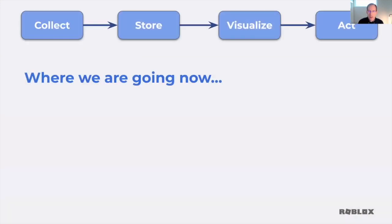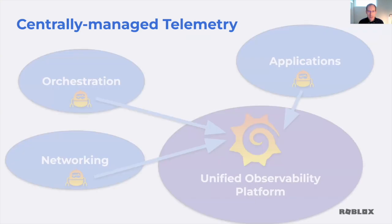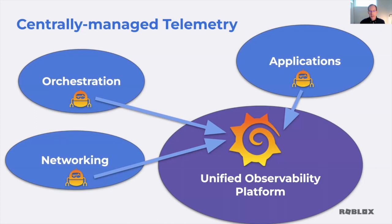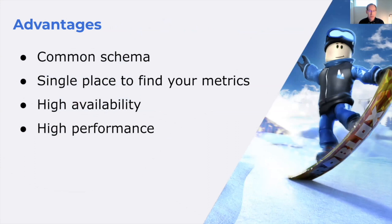Now let's talk about where we are and where we're going. We're evolving towards a centrally managed telemetry platform. Instead of each team building its own stack, we're centralizing the observability function on our team and using many tools — Grafana prominently among them — to bring in the data and visualize and act on it centrally. This gives us a common schema where we can align all the different sources of data on common definitions of hostname, data center, etc. We can work towards a single Grafana instance to find your metrics data. Because this is a dedicated team, we can also invest in high availability and high performance and apply those investments across all of our observability customers.